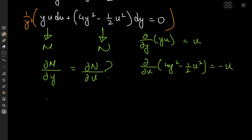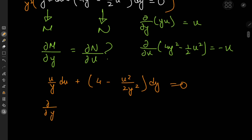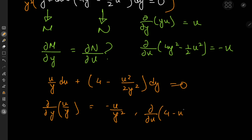After multiplying by 1/y², we have u/y du plus (4 minus u²)/(2y²) dy equal to zero. The partial derivative with respect to y of u/y is negative u/y², and the partial derivative with respect to u of (4 minus u²)/(2y²) is also negative u/y². So the differential equation is now exact.